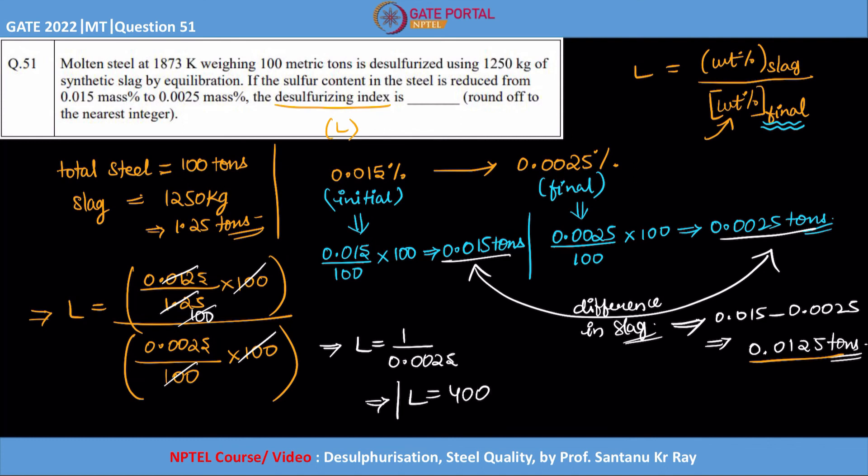So therefore the desulfurization index for this particular data is 400. Higher the value of L, higher is the sulfur reduction. That means higher is the sulfur that is going to the slag. So this is about this particular numerical, very important numerical. Many many times in previous year GATE you can find these models calculating the desulfurizing index or dephosphorization index. The process and the formula is this. So yes, I hope this video is clear, this concept is clear. Thank you for watching.